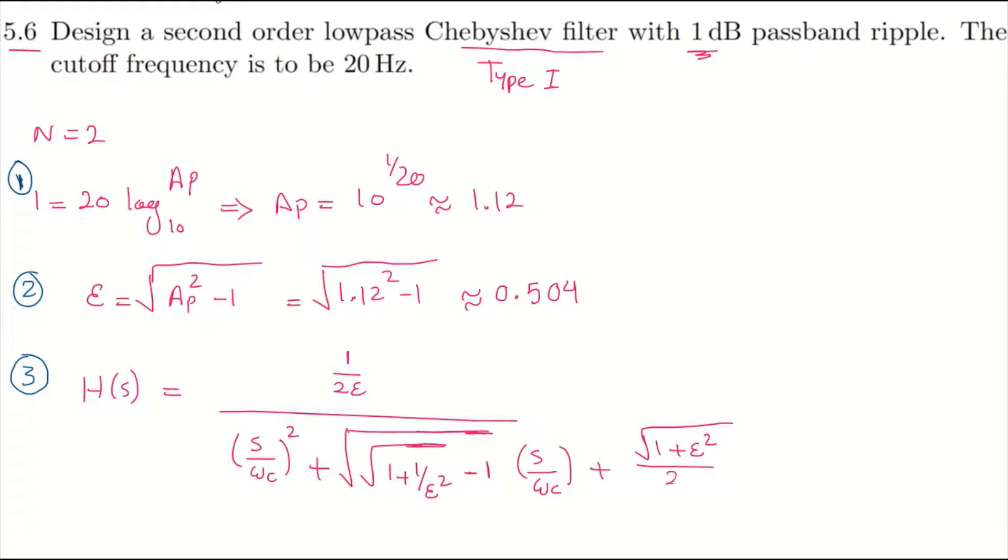This is the general form of the transfer function, so we need to replace epsilon here and also omega_c. If you check here, you see that the cutoff frequency, fc, the cutoff frequency is 20 hertz.